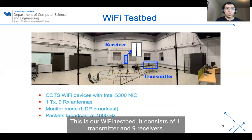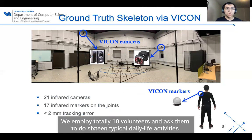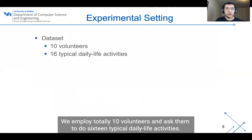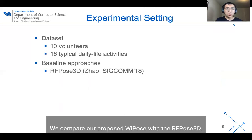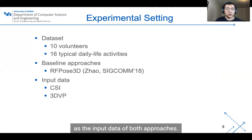This is our Wi-Fi testbed. It contains one transmitter and nine receivers, and we use the Vicon motion capture system to generate the ground truth skeleton. We employed a total of 10 volunteers and asked them to perform 16 typical daily life activities. We compare our proposed Wi-Pose with iF-Pose 3D, using CSI as well as the 3D velocity profile as input data for both approaches.